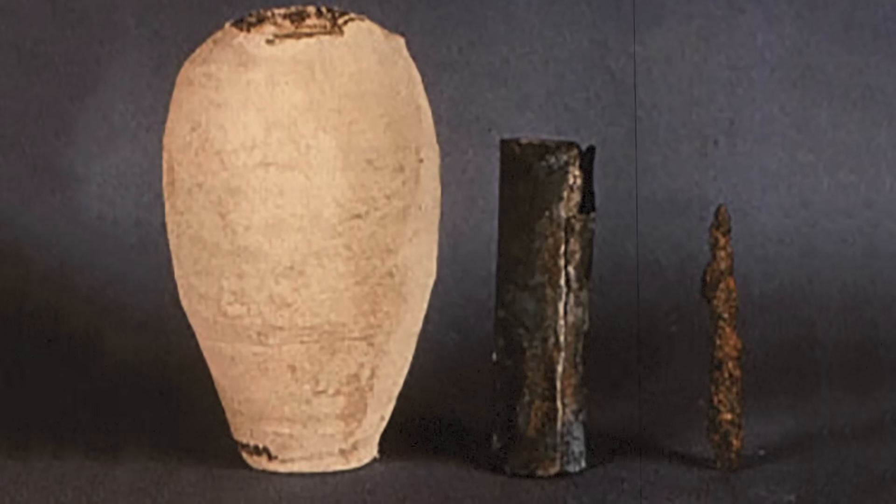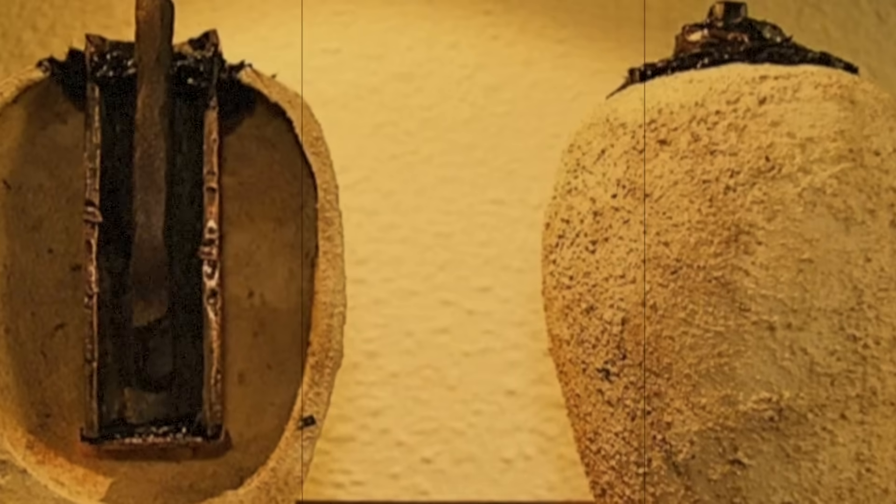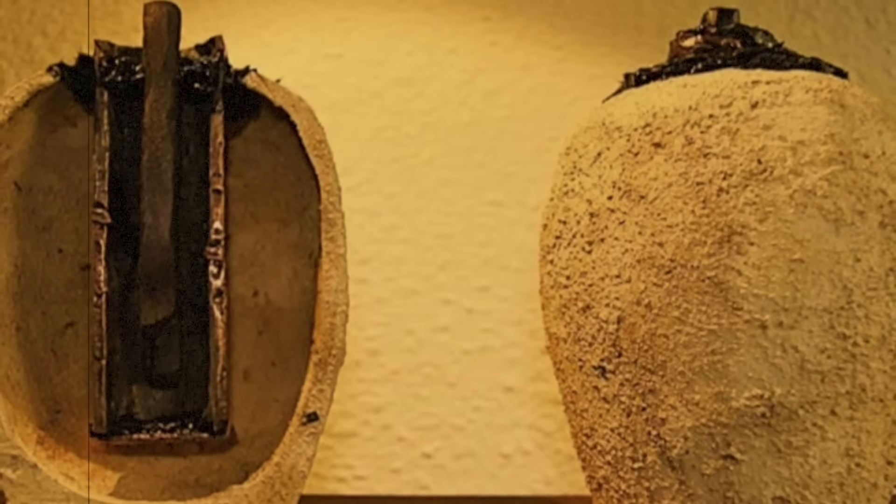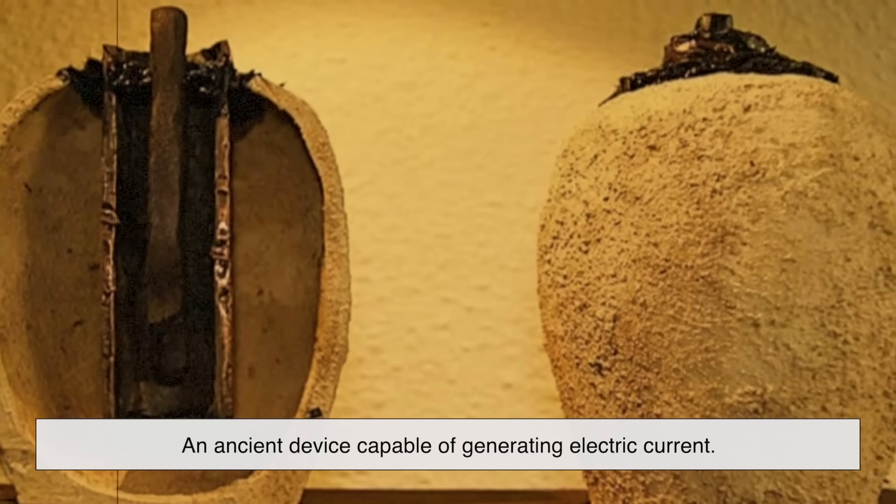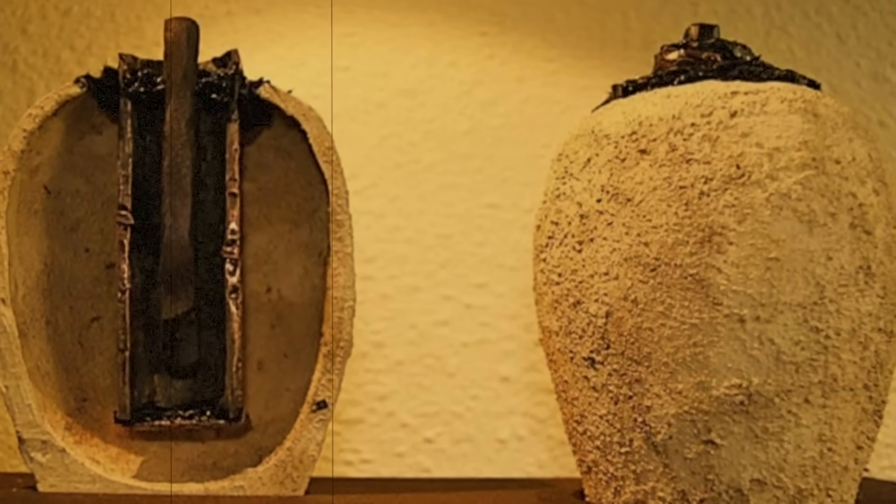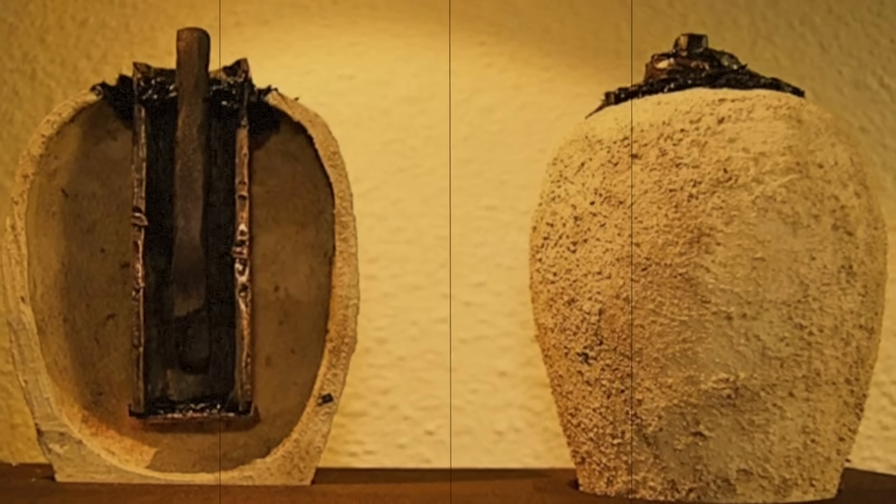These components look strikingly similar to the basic parts of a battery. Koenig proposed that this wasn't just a random vessel, but rather an ancient device capable of generating electric current. His claim shocked the academic world and sparked a debate that has never fully settled.